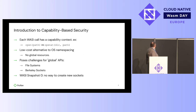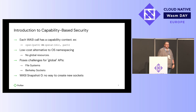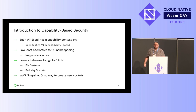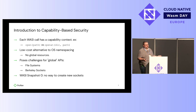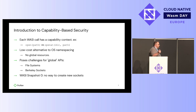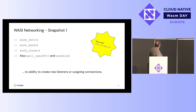The fundamental situation we found ourselves in with Snapshot 0 was that there was no way to create new sockets. The runtime could create sockets ahead of time, you could hand them to the runtime, you could read and write on them, you could close them — but that was it. If you wanted to do more, you were out of luck.